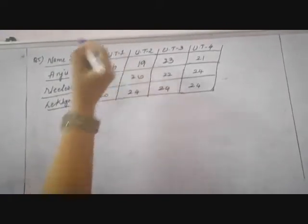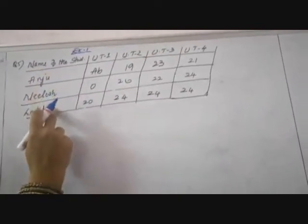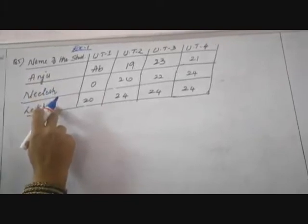Exercise 1. The following table shows the marks scored by Anju, Nilesh and Lekhya. These are the names of the students: Anju, Nilesh and Lekhya. Here question number 1, 2, 3, 4 bits are given children — first, second, third and fourth. In the fourth bit, he is asking you who performed best in English.